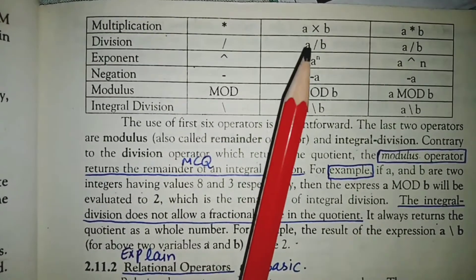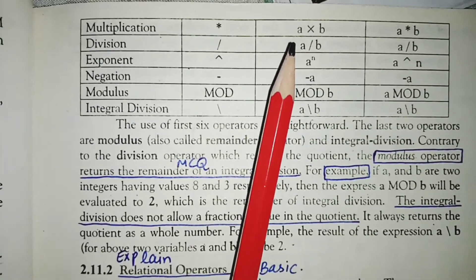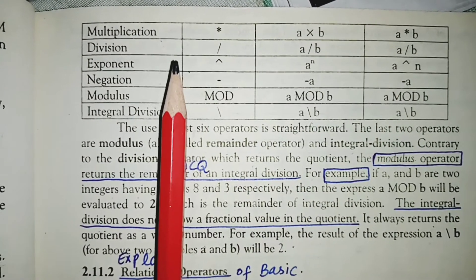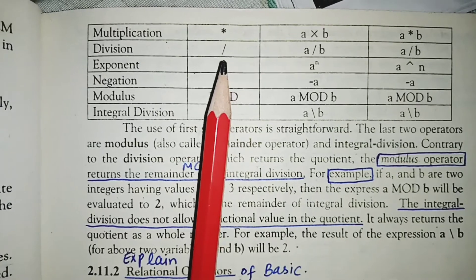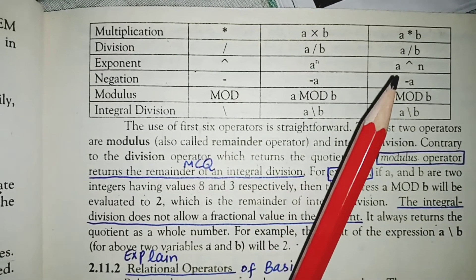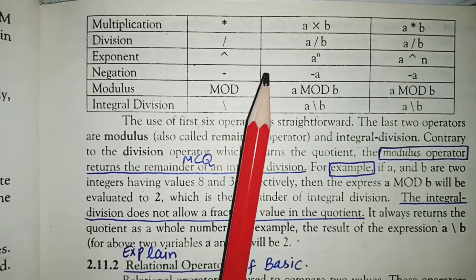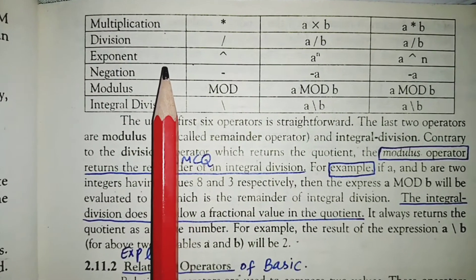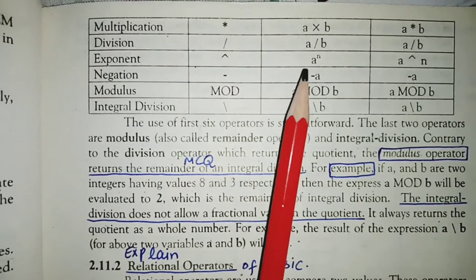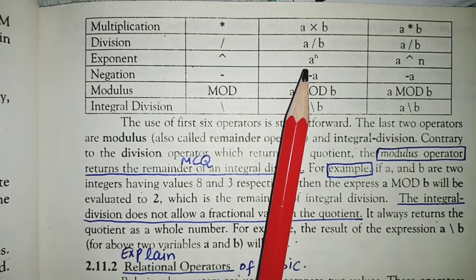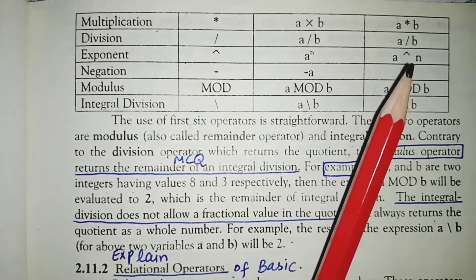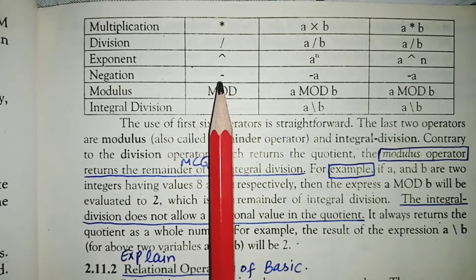For multiplication, the asterisk symbol is used. The algebraic expression is A × B, and the BASIC expression is A * B. Next is division — the symbol is forward slash. The algebraic expression and BASIC expression are the same: A / B. Next is exponent or power — the symbol is caret. The algebraic expression is A to the power N, and the BASIC expression is A ^ N.